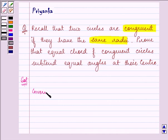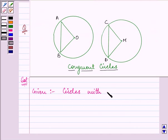Here we are given that circles with—let us have the diagram also—circles with center O and M are congruent.